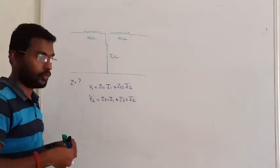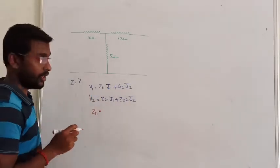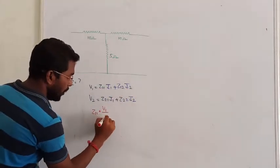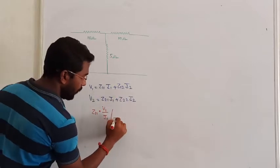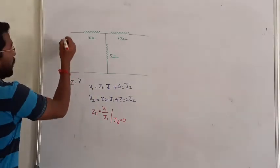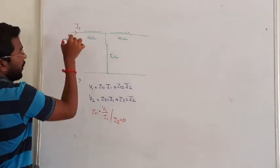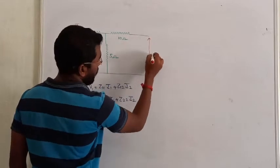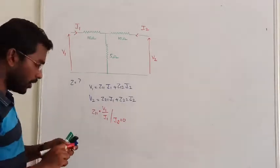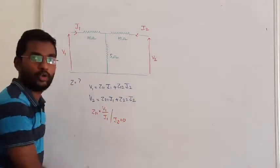First, let us calculate Z11. We calculate it by setting I2 equal to 0. Take this network — the input port is where we drive voltage V1 and current I1, and the output port is where we apply voltage V2 and current I2. While calculating Z11, the value of I2 is going to be 0.